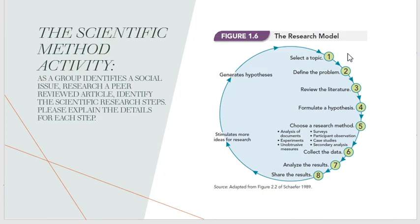There are unobtrusive measures where you observe groups and individuals without letting them know. Surveys are a piece of paper with questions on them. Participant observation is where you observe people while being part of that group. Case studies can be an individual, a group, or an institution. Secondary analysis can also include police reports or data already collected by the U.S. Census Bureau.